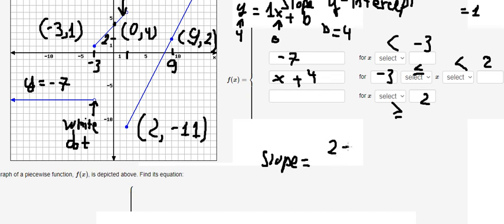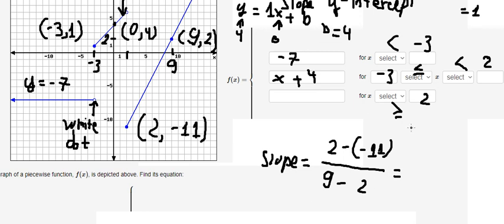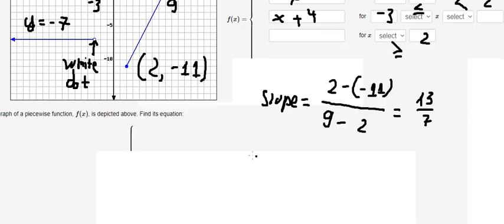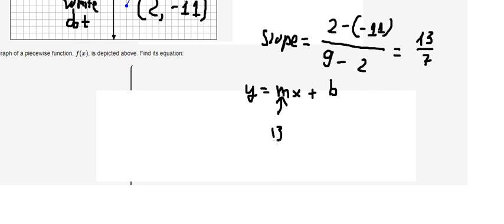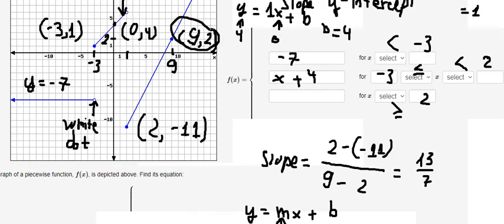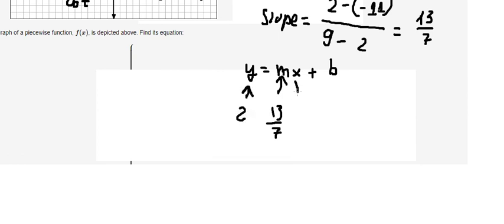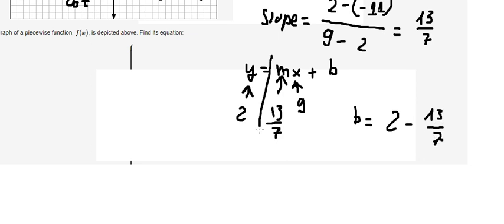Now we can apply the same formula. We have two minus negative eleven over nine minus two, which gives us 13 over seven. So y equals 13/7 times x plus b. I will choose the point x equals nine and y equals two, substitute in to find b, and then write the final answer for this piece.